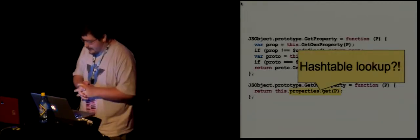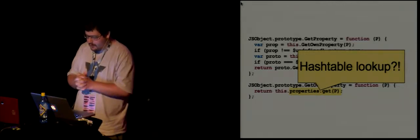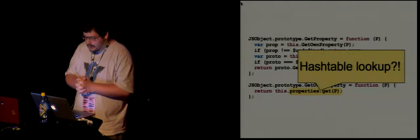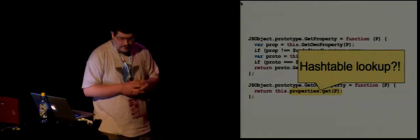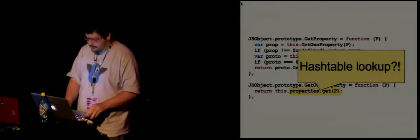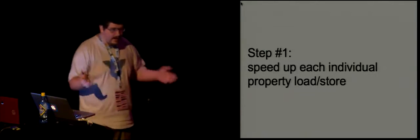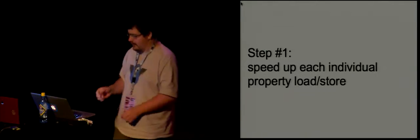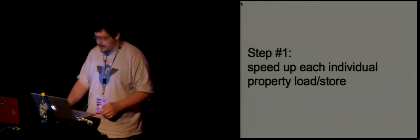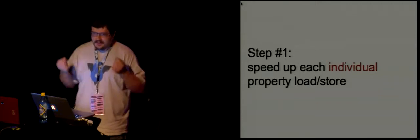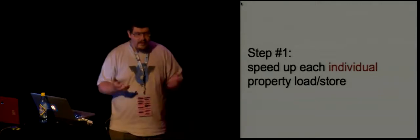What's wrong with that? It's not very performant — you have to go this path every time you do a load. So you decide to make a first step, which V8 made when it was released, to speed up JavaScript. It's a very simple step: how fast can we become if we speed up each individual load and store, or each individual addition, multiplication — each individual operation that has a dynamic behavior? Because every operation in JavaScript has some dynamic lookup built in.